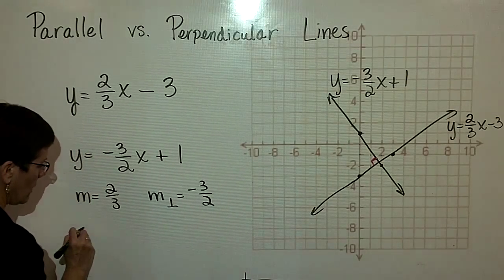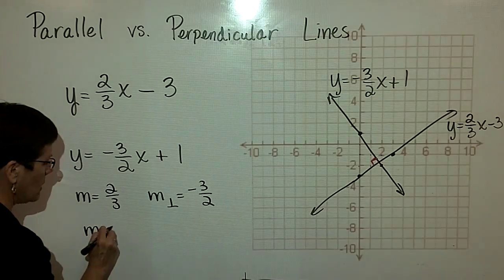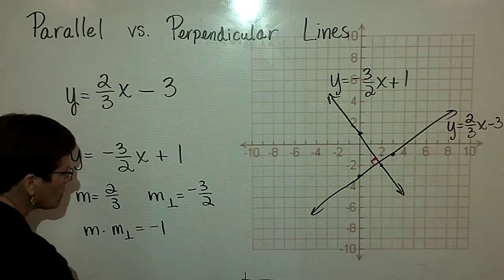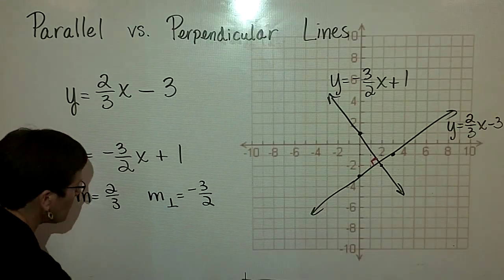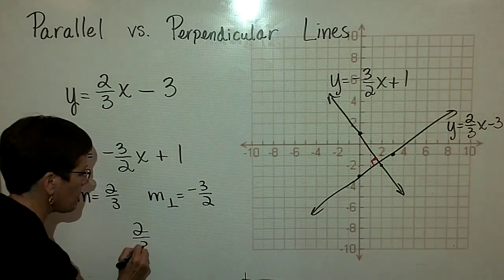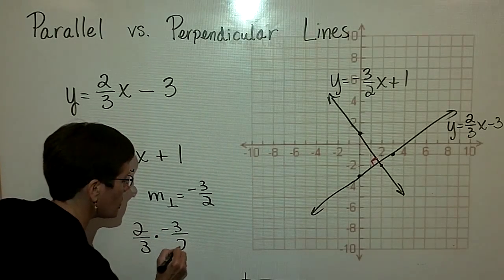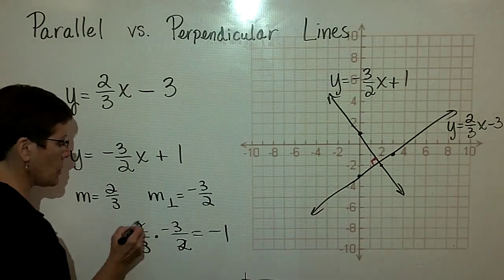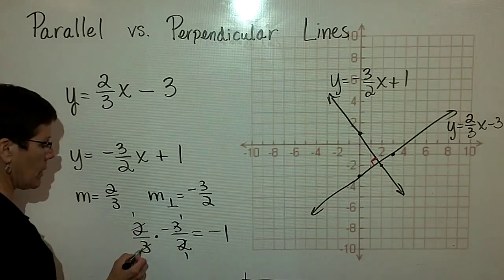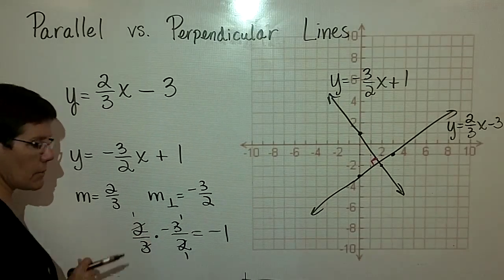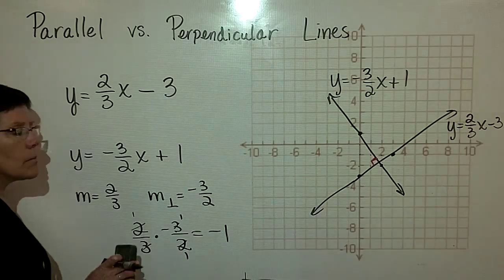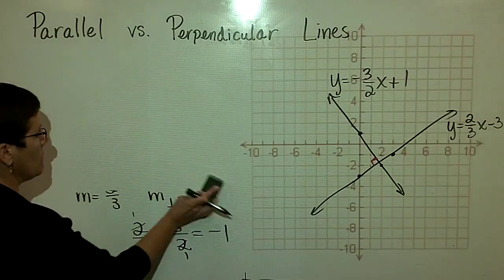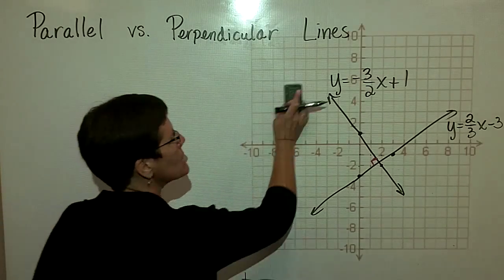Another way we say is that the slope of 1 times the slope that's perpendicular to it should be equal to negative 1. That means that this 2 thirds times negative 3 over 2 should equal negative 1. And it does in this case because those reduce to be 1 and these reduce to be 1, and a positive times a negative is that negative. So again, their product of their slope should be equal to negative 1, or their slope should be the reciprocal and opposite in sign.